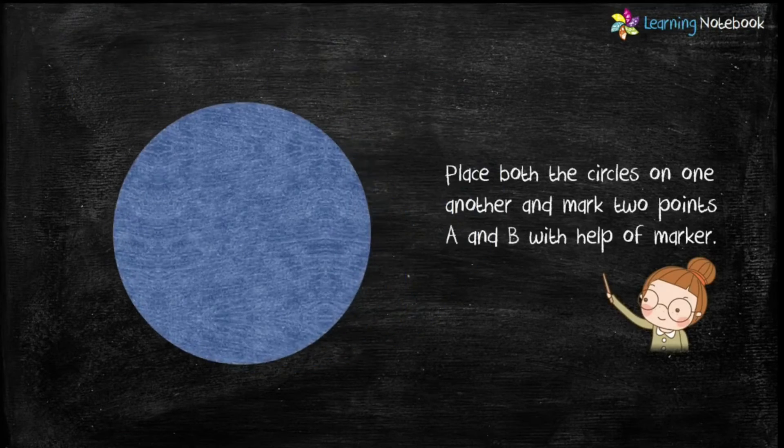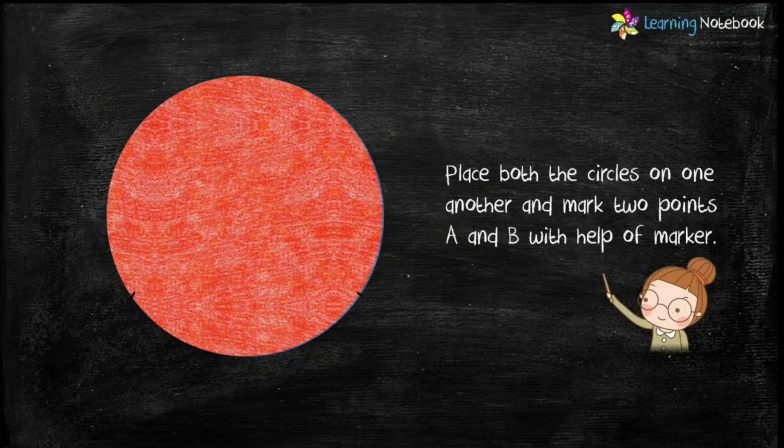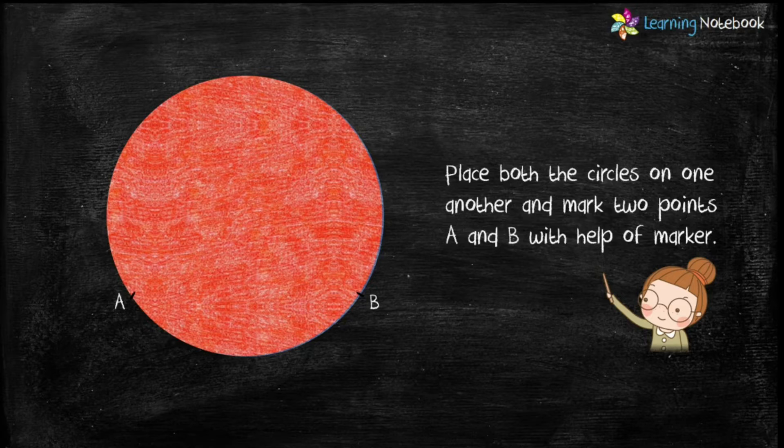Now students, place both the circles on one another and mark two points A and B as shown here with the help of a marker.